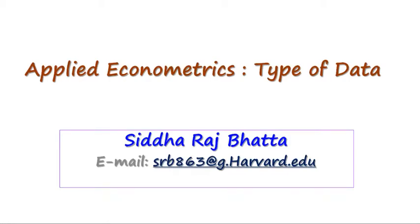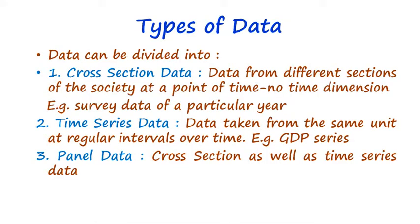Hello, welcome to this new video. In this video I will talk about the types of data that we use in econometric analysis. Data can be divided into three types: the first one is cross-section data, the second one is time series data, and the third one is panel data.